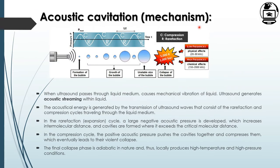The mechanism for acoustic cavitation begins when an ultrasound wave is supplied, causing wave formation with successive compression and rarefaction cycles — C for compression and R for rarefaction. When ultrasound passes through a liquid medium, it causes mechanical vibration of the liquid, which leads to the formation of bubbles or cavities inside the liquid.